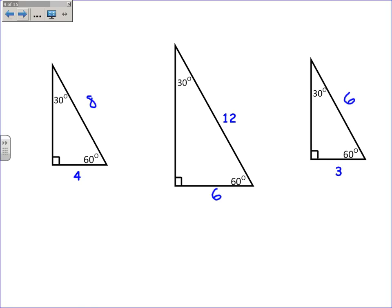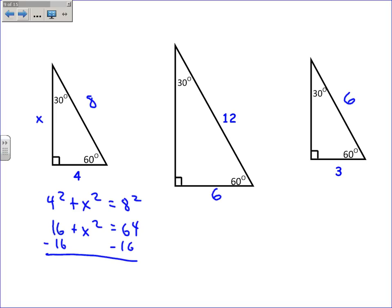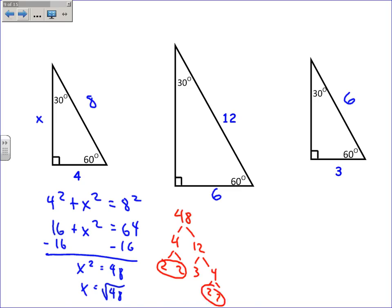This is a right triangle, so we can use the Pythagorean theorem. 4 squared plus x squared equals 8 squared. 4 squared is 16, plus x squared equals 64. Subtracting 16 from both sides, x squared equals 48, and x equals the square root of 48. To simplify, using a factor tree: 4 times 12, where 4 is 2 times 2, and 12 is 3 times 4, which is 2 and 2. I have two pairs — perfect squares — giving 2 times 2 root 3, which is 4 root 3.